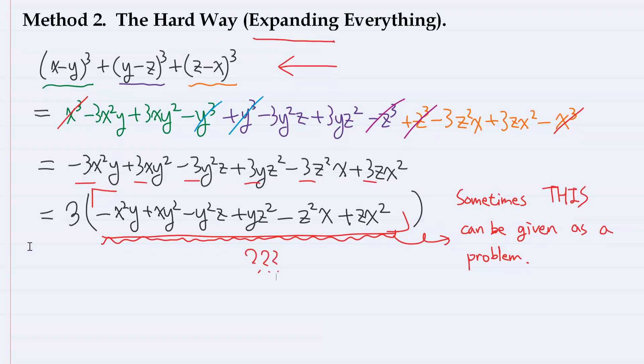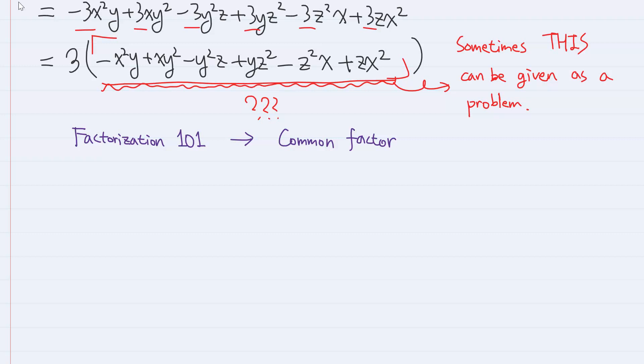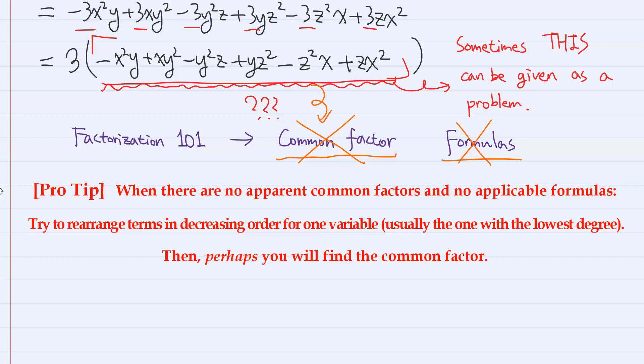So, how do we do it? Well, the number one priority in factorization is to find a common factor. But in here, there's no common factor that we can easily find. And also, there are no applicable formulas. In this case, the general rule of thumb is: when there are no apparent common factors and no applicable formulas, try to rearrange terms in decreasing order for one variable, usually the one with the lowest degree. Then, perhaps you will find the common factor. This 'perhaps' is very important because finding the common factor is not always guaranteed even though it's clearly there. But still, this method works surprisingly well in so many cases.